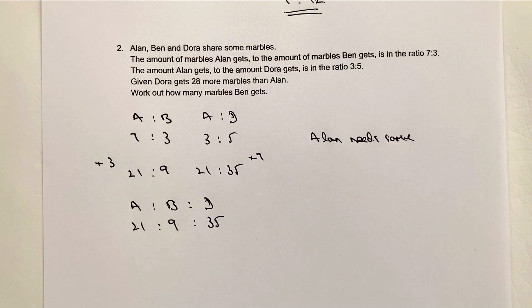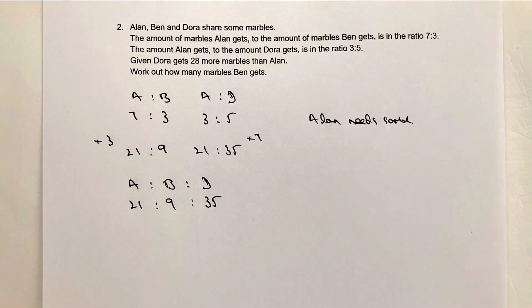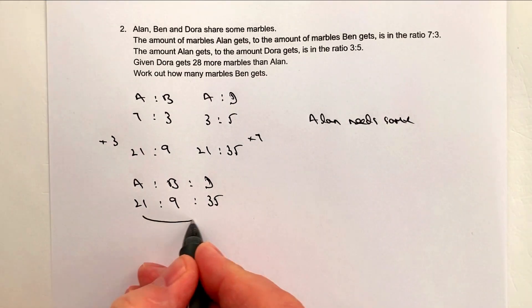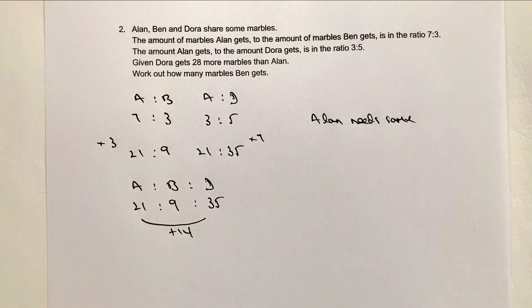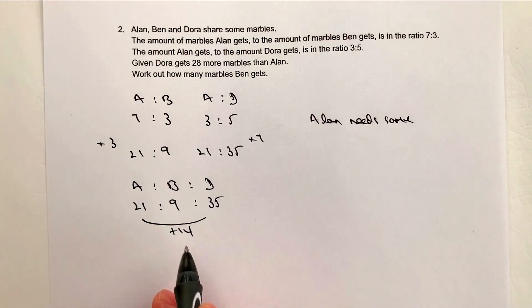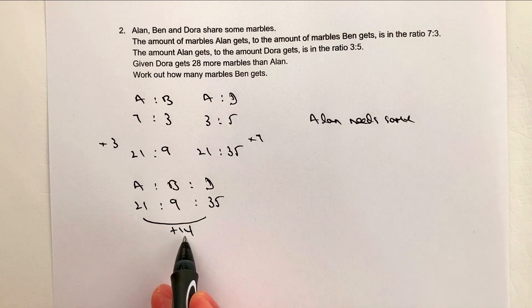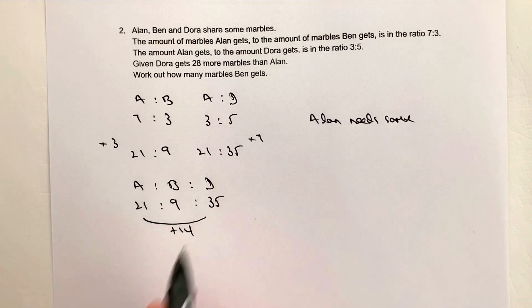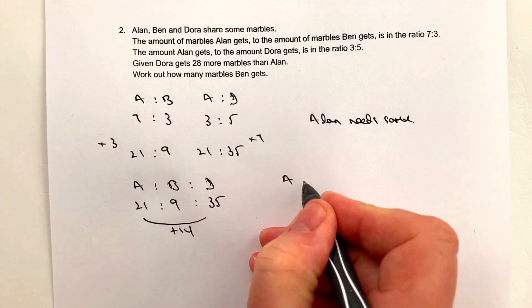It says, given that Dora gets 28 more marbles than Alan. Well, unfortunately, as it stands at the moment, that's just not the case. As it stands at the moment, Dora has 14 more marbles than Alan. So we've got to put ourselves in a position where Dora actually gets 28 more marbles than Alan. Now, in order to do that, all we're going to do is multiply this by 2. If we multiply this by 2, it means we're going to multiply all the other numbers by 2.